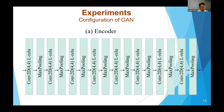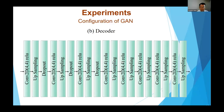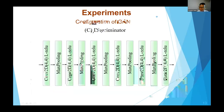Four-by-four kernel filters were used for convolution in the encoder, and the LeakyReLU was used as an activation function. Similarly in the discriminator, four-by-four filters and LeakyReLU were used as the kernel and activation function, and we used three dropout layers.